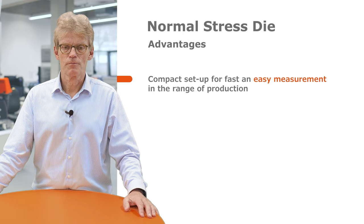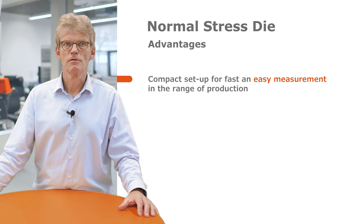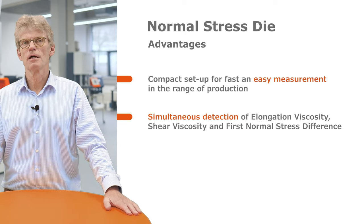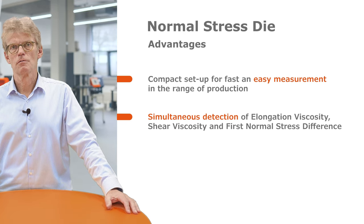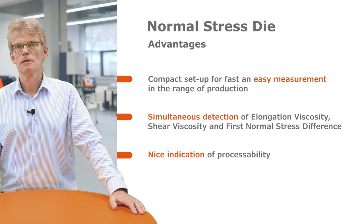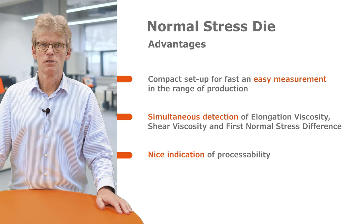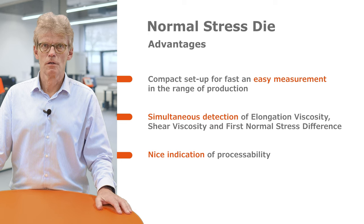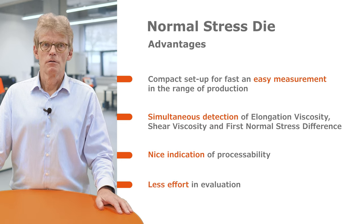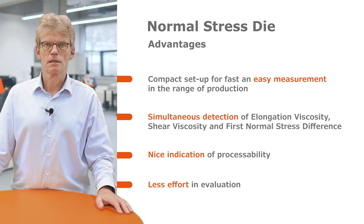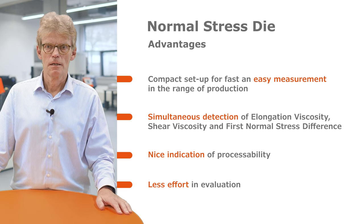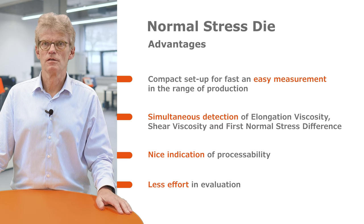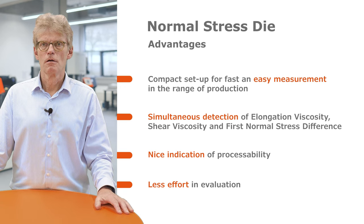The compact setup allows to determine first normal stress difference at shear rates in the range of production, and by this is able to give some correlation to extrusion properties. It allows simultaneous detection of three rheological properties: elongation viscosity, shear viscosity, and first normal stress difference, so also less testing effort. We found a nice indication of processability in regard of the onset of flow instabilities. Satlucan and Masli also found that the shaping of die drool can also be correlated to the height of first normal stress difference. We also have less effort in the detection than using a GAVI die to analyze rubber compounds.